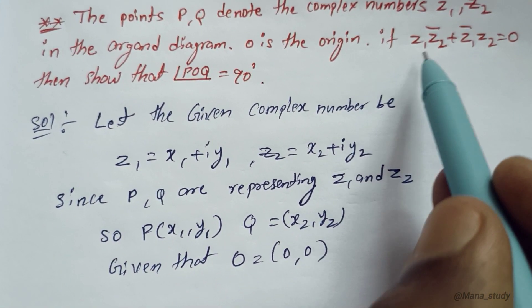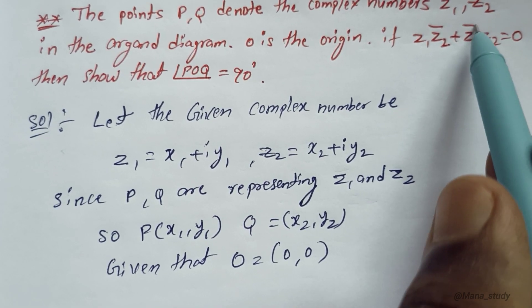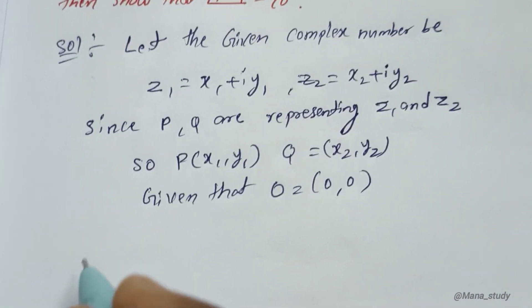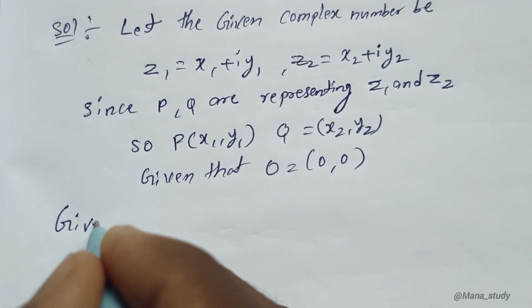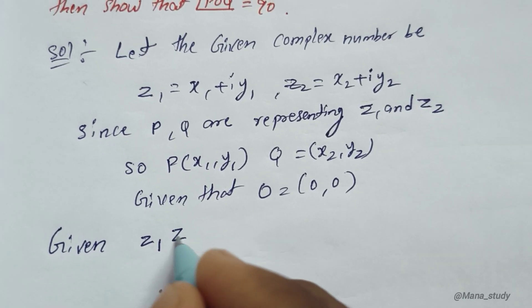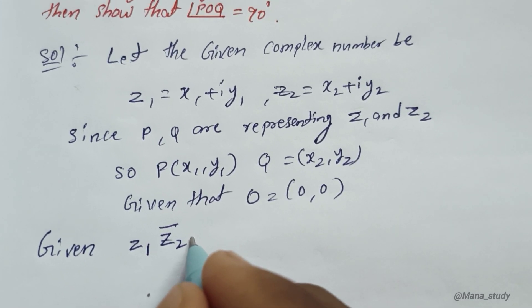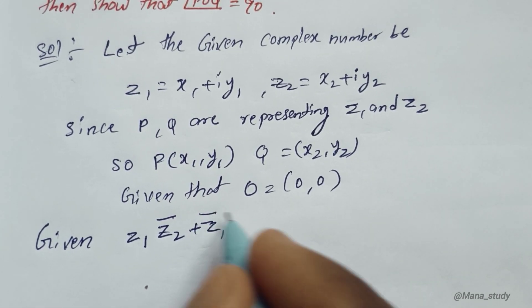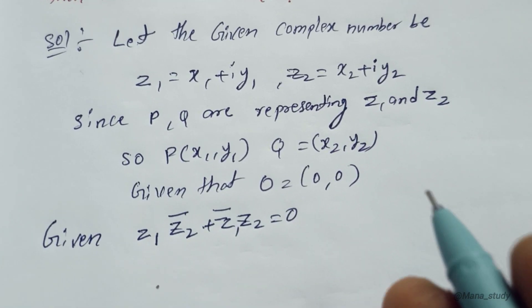Given: Z1·Z̄2 plus Z̄1·Z2 equals 0. We will now expand this expression using Z1 equals X1 plus iY1 and Z2 equals X2 plus iY2.